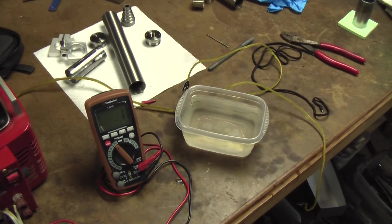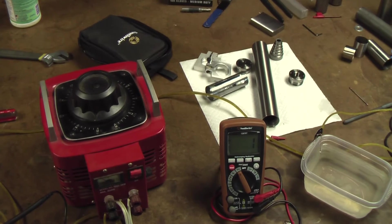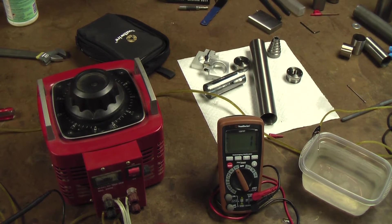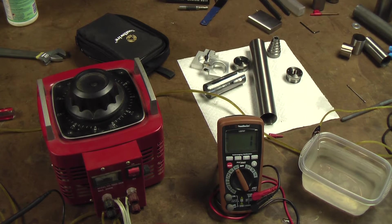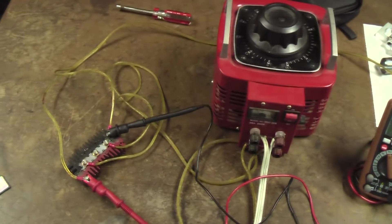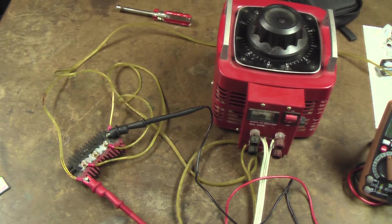All right, one more time. Got the variac here, puts out AC volts up to 130 volts, running through an automotive diode, converts it to DC.